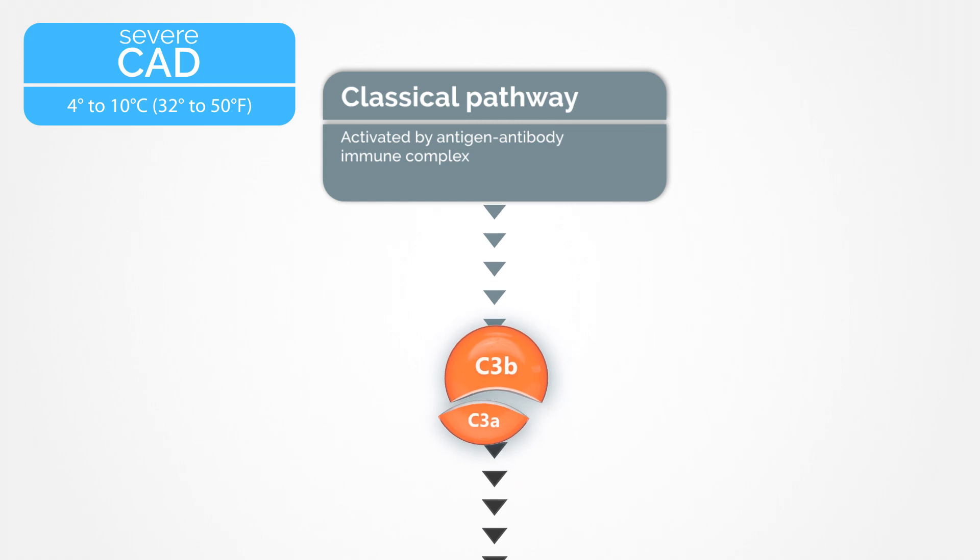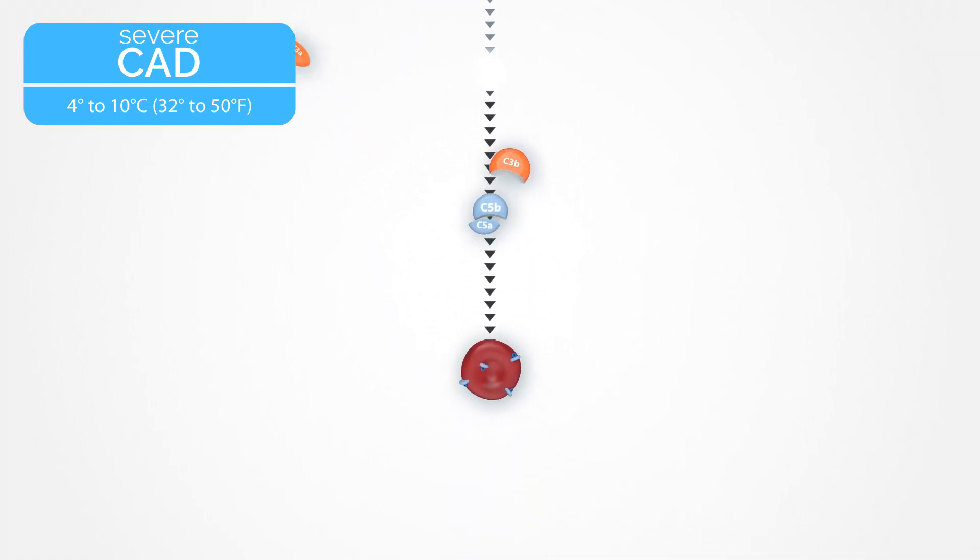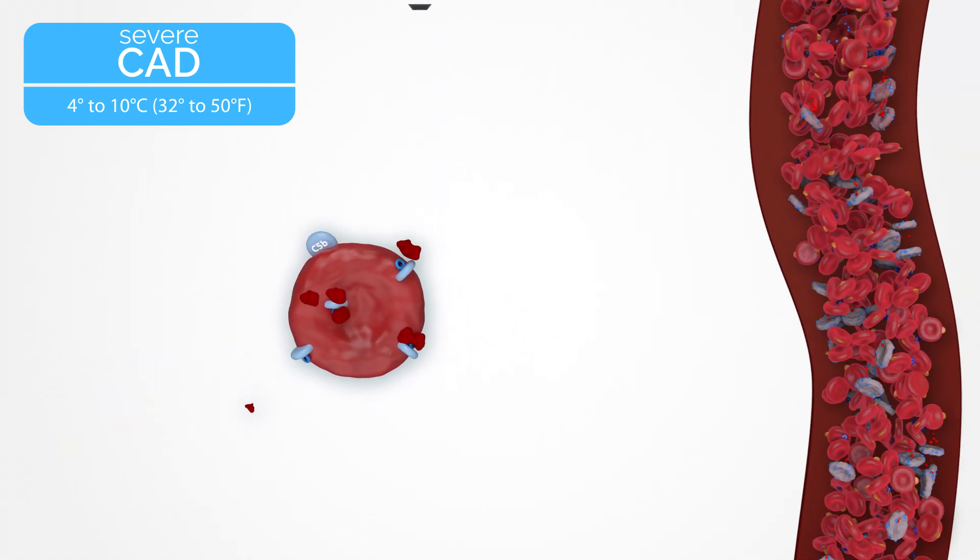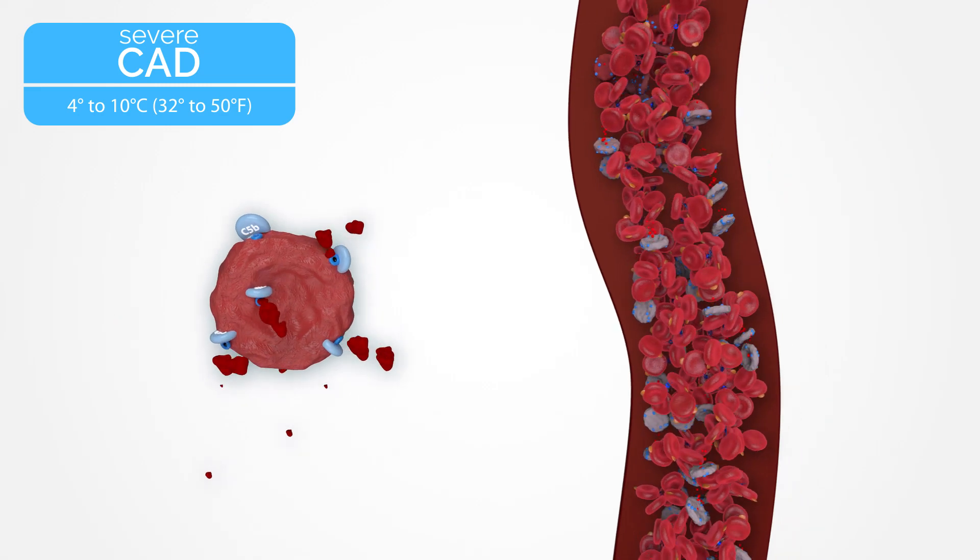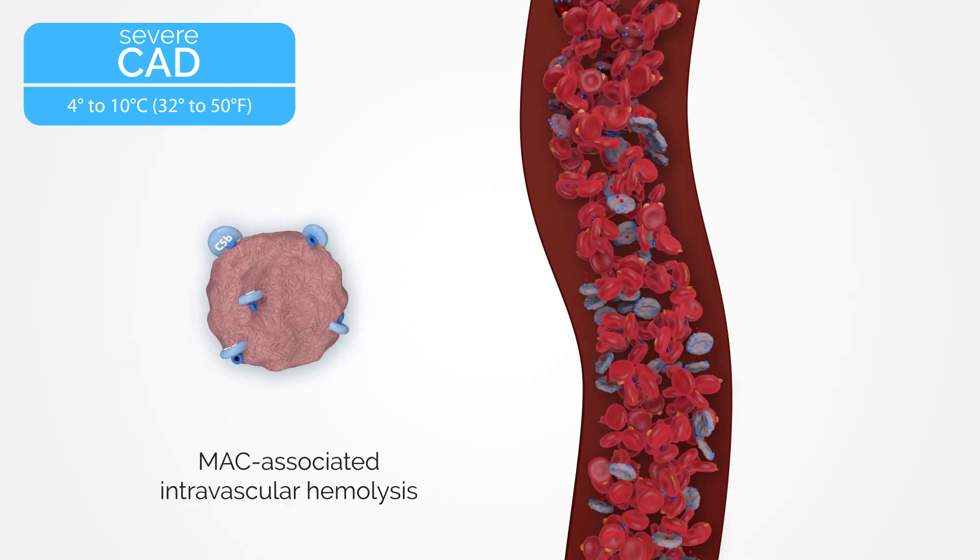In severe CAD, C3B activates the whole complement cascade, causing the formation of membrane attack complexes known as MAC, which form holes in the surface of red blood cells, resulting in hemolysis inside blood vessels, called intravascular hemolysis.